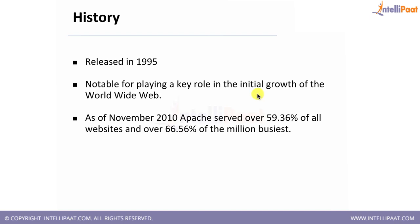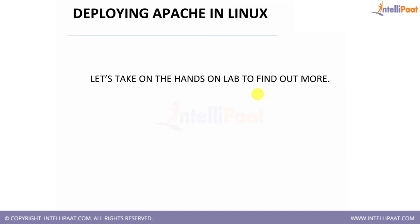As of 2010, statistics showed that around 60% of all websites and 66% of the busiest websites — those with more than a million user visits — used Apache. Nowadays there is another web server called Nginx that is catching up, but Apache is still the most robust, most used, and most reliable web server.